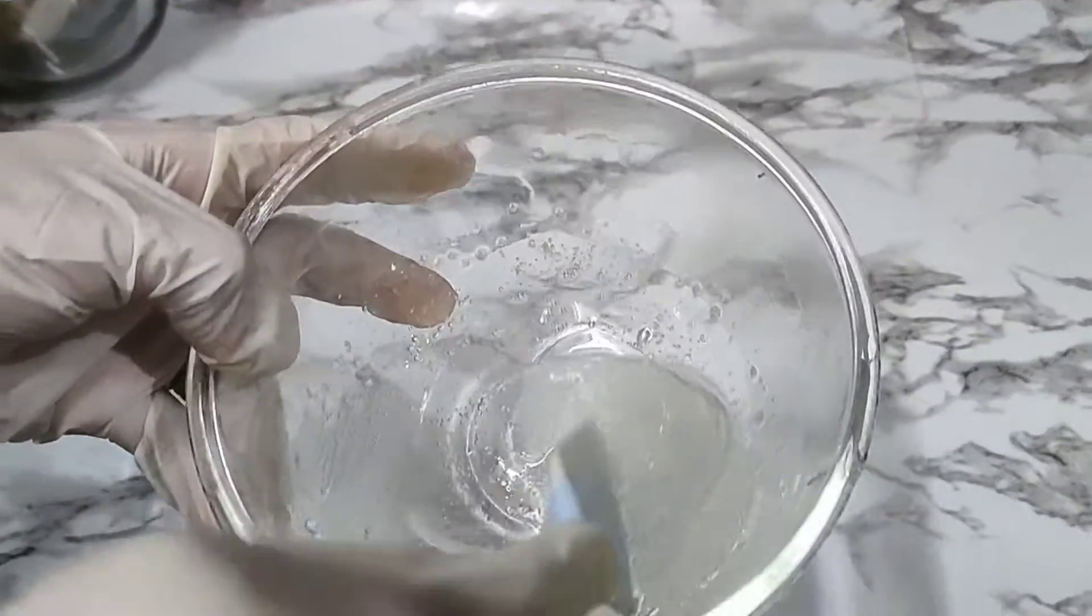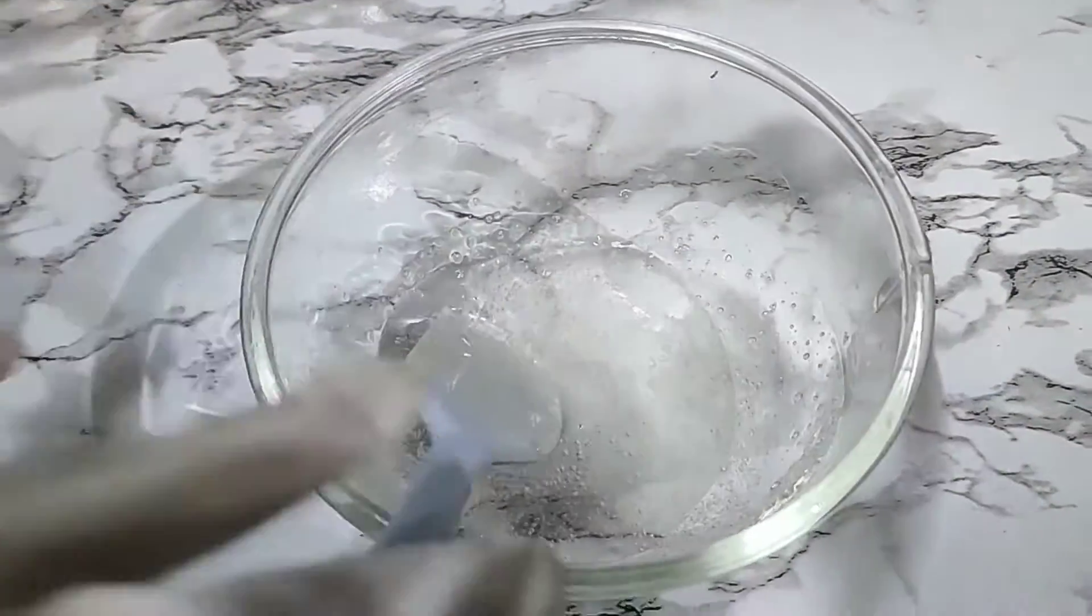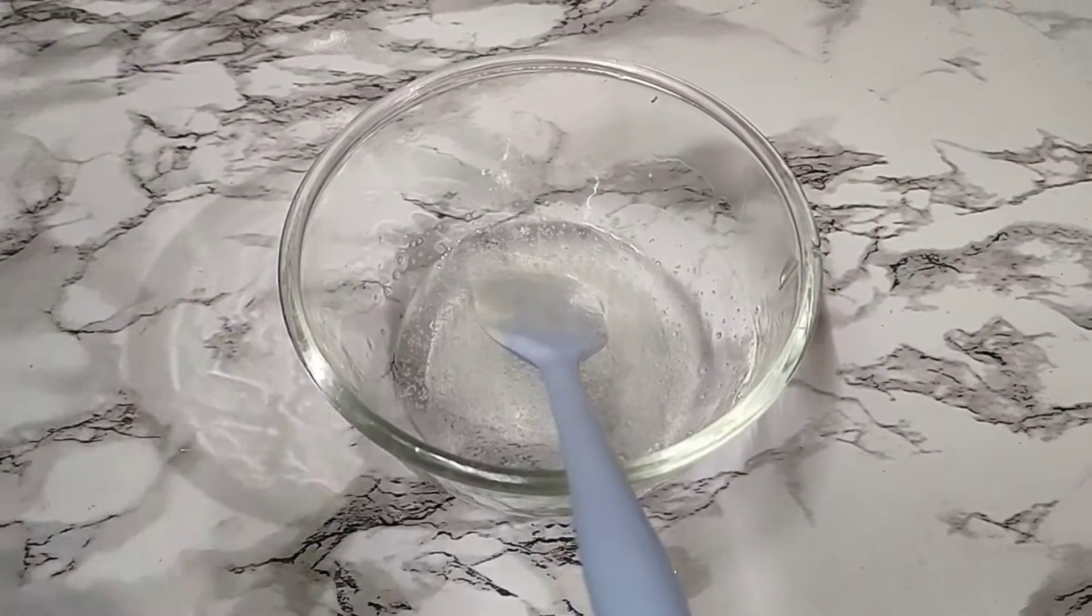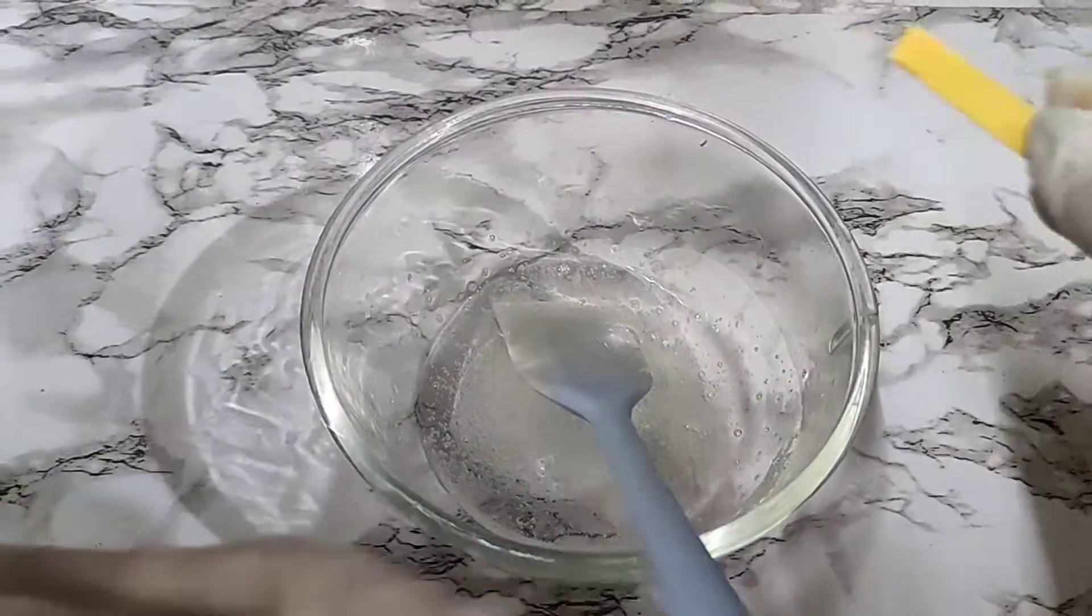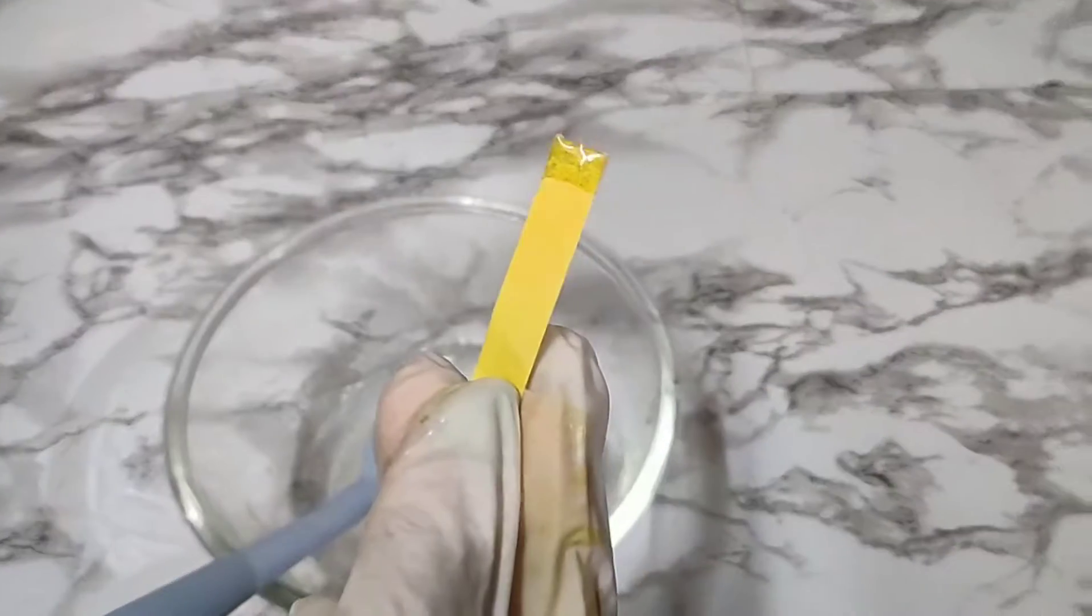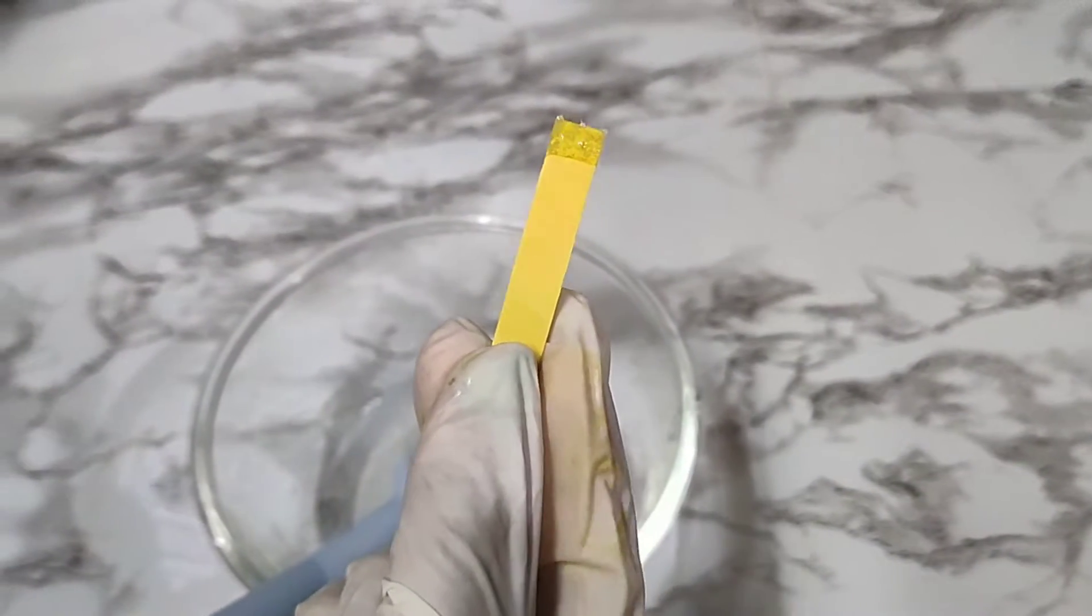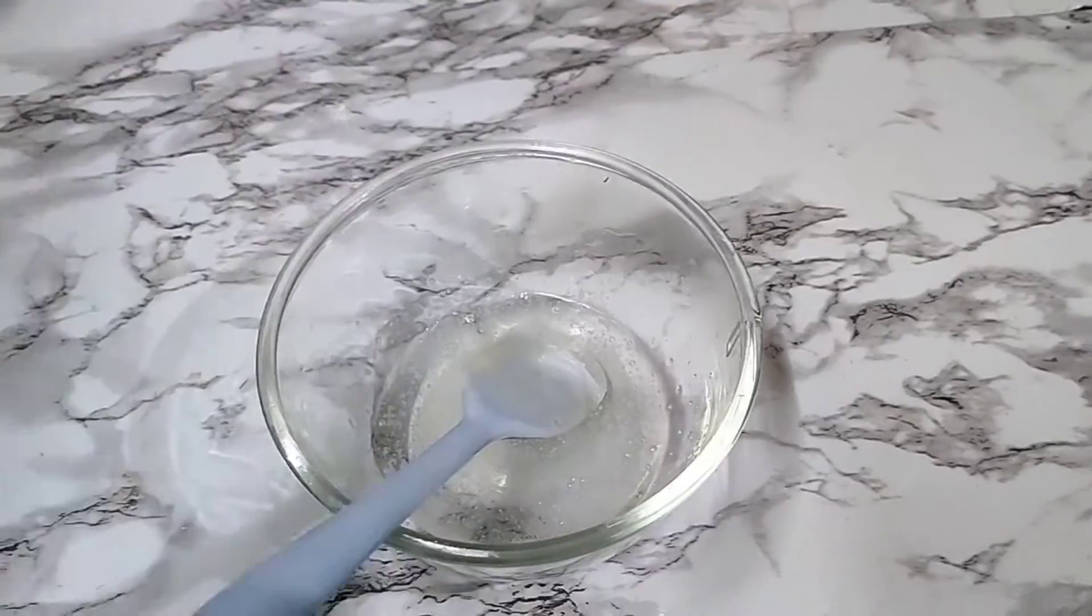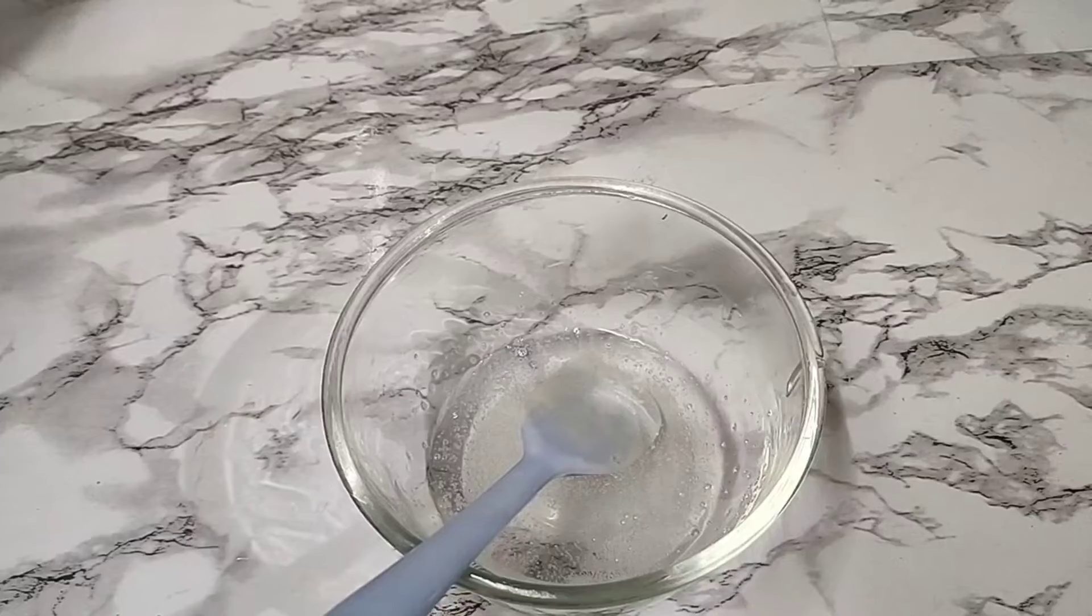Now we will quickly check the pH of this. I've taken my pH strip here and I'll just put it in. If you see, this is a good yellow color, so we have a properly perfectly balanced pH. We don't need to lower the pH at all, and this is good to use.